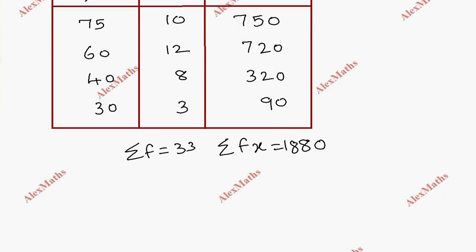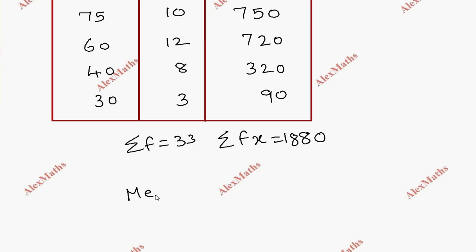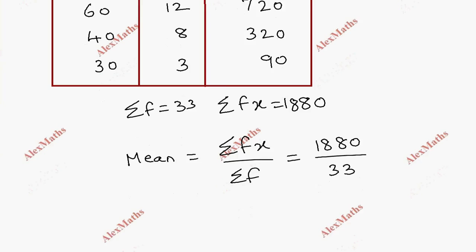So mean equals sigma fx by sigma f. So 1880 divided by 33. So this is the mean.